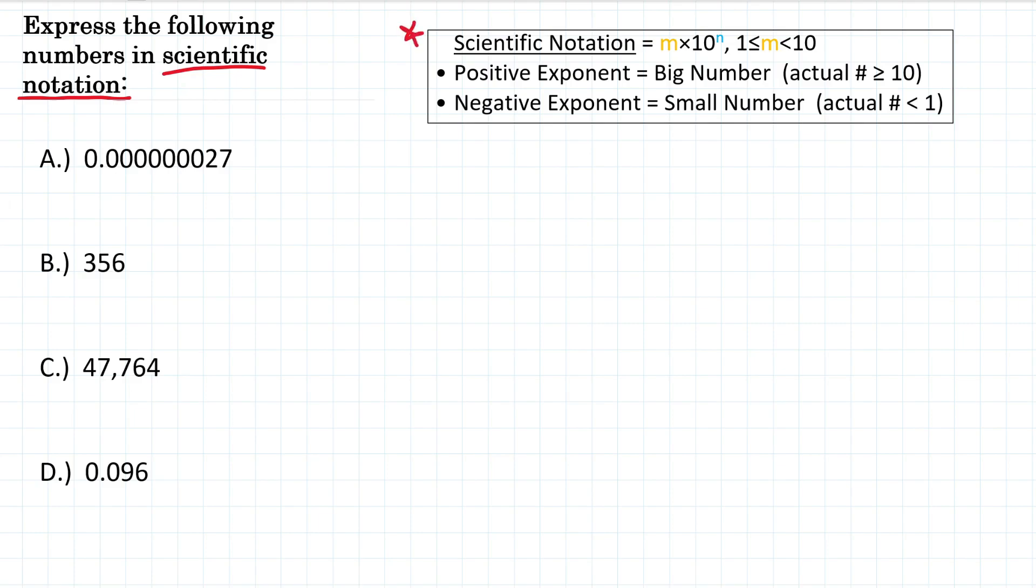So scientific notation is generally an easier way to write really big or really small numbers. Scientific notation is written as some number we will call m times 10 to the n power. So something times 10 to a power, and that first number that we're calling m, it must be 1 or greater and less than 10.